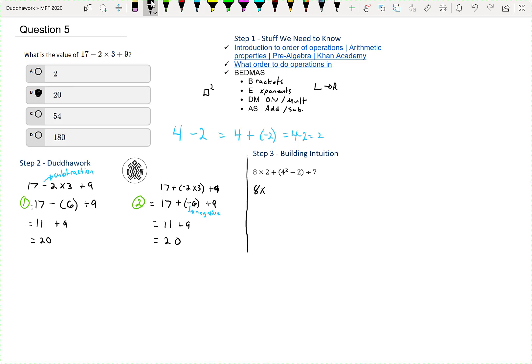So we have 8 times 2. We just leave that there for now. So we have the exponent. We do that first. So 4 squared is 4 times 4. It's not 8. It's not 4 times 2. It's 4 times 4, which is 16 minus 2 divided by 7.